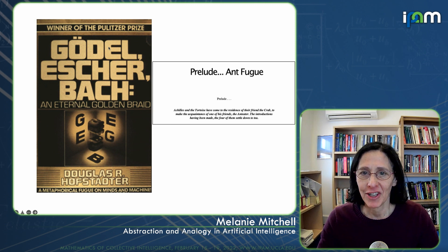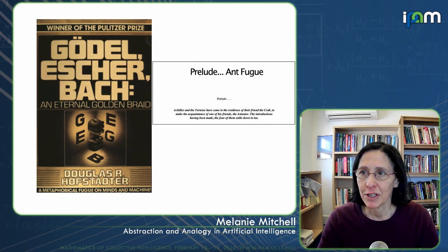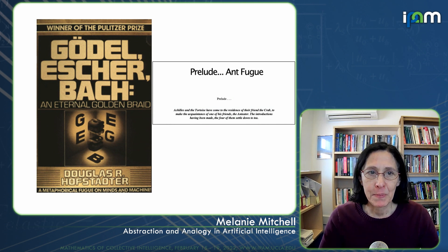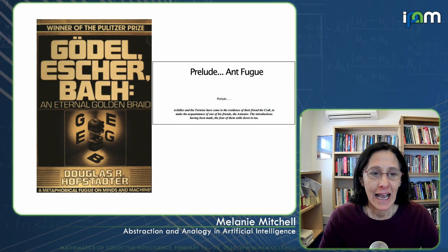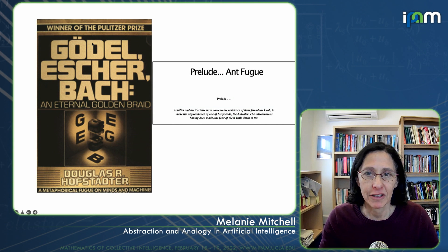Hofstadter was extremely inspired by the collective behavior of social insects like ants, and wrote extensively about that analogy in this book, using that analogy between social insects and human brains as a way to build a schematic for an architecture for thinking about intelligence.